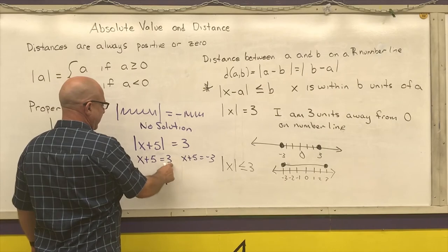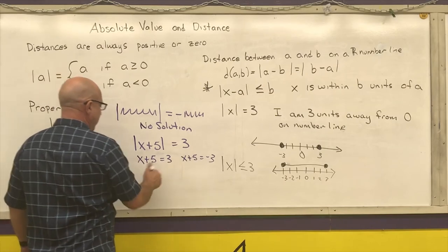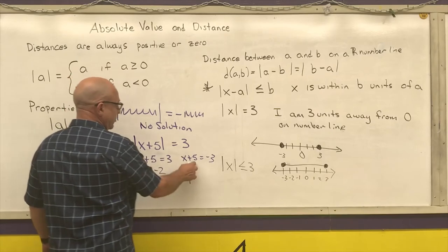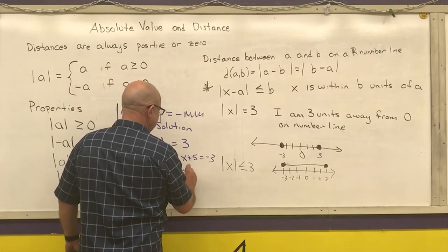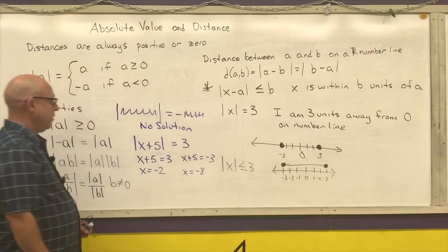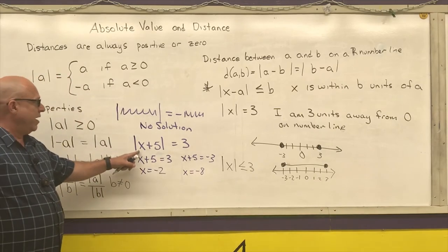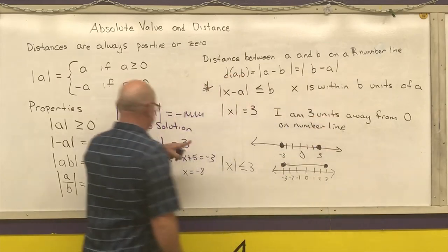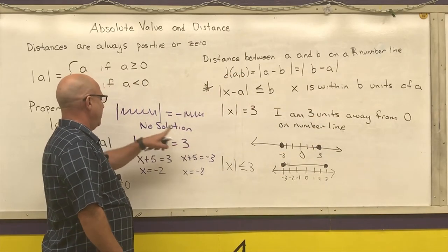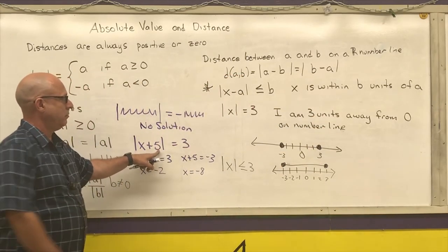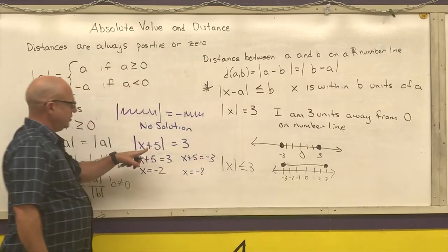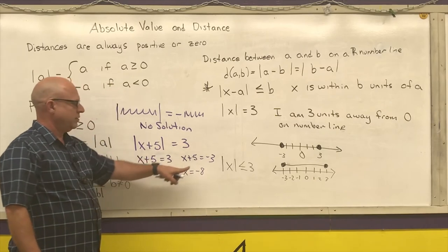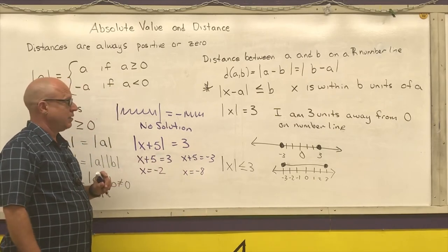You solve both of these. I'm going to subtract five from this one and I get x equals negative two. I'm going to subtract five from this one and I get x equals negative eight. And I said in words x is within three units of the opposite of this number, which is five. The opposite would be negative five and both of these numbers are within three units of negative five.